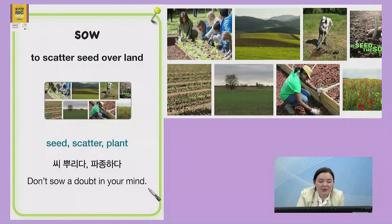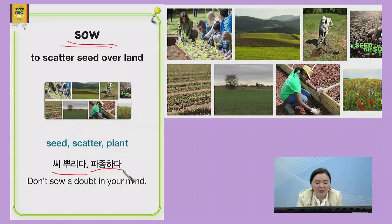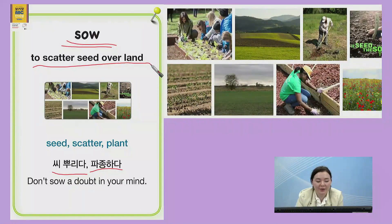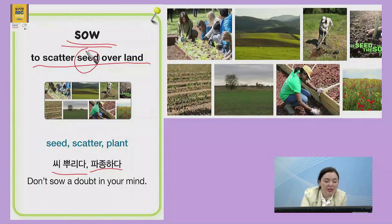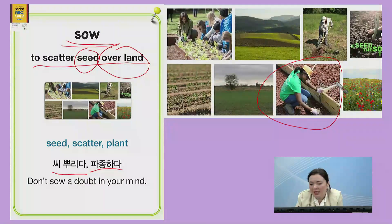The next word is sow. 한국말로는 씨를 뿌리다, 파종하다. 영어로 설명하면, to scatter seed over land. 씨를 땅에서 뿌리는 거예요. As you can see, this farmer is sowing seeds. So is this farmer.